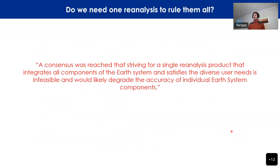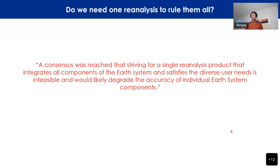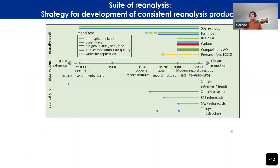An obvious question that came up during the meeting is: do we need one reanalysis to rule them all? The consensus was that striving for a single reanalysis product that integrates all components of the Earth system and satisfies diverse user needs is infeasible, and would likely degrade the accuracy of individual Earth system components. As an alternative, we came up with a suite of reanalysis strategy for development.